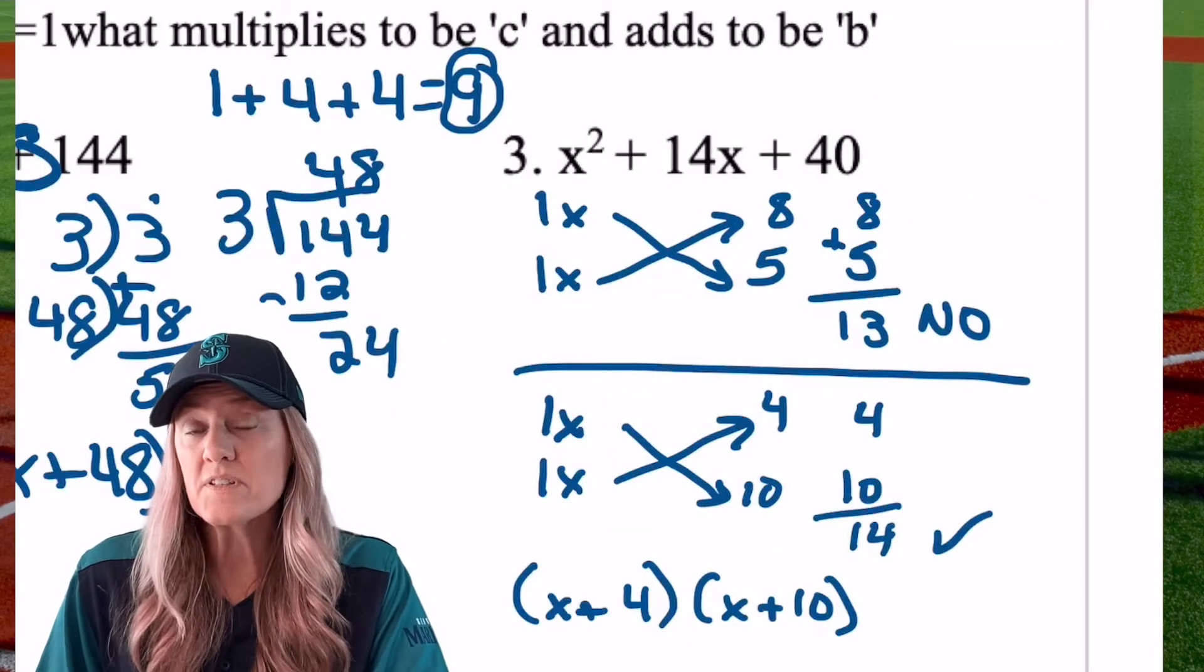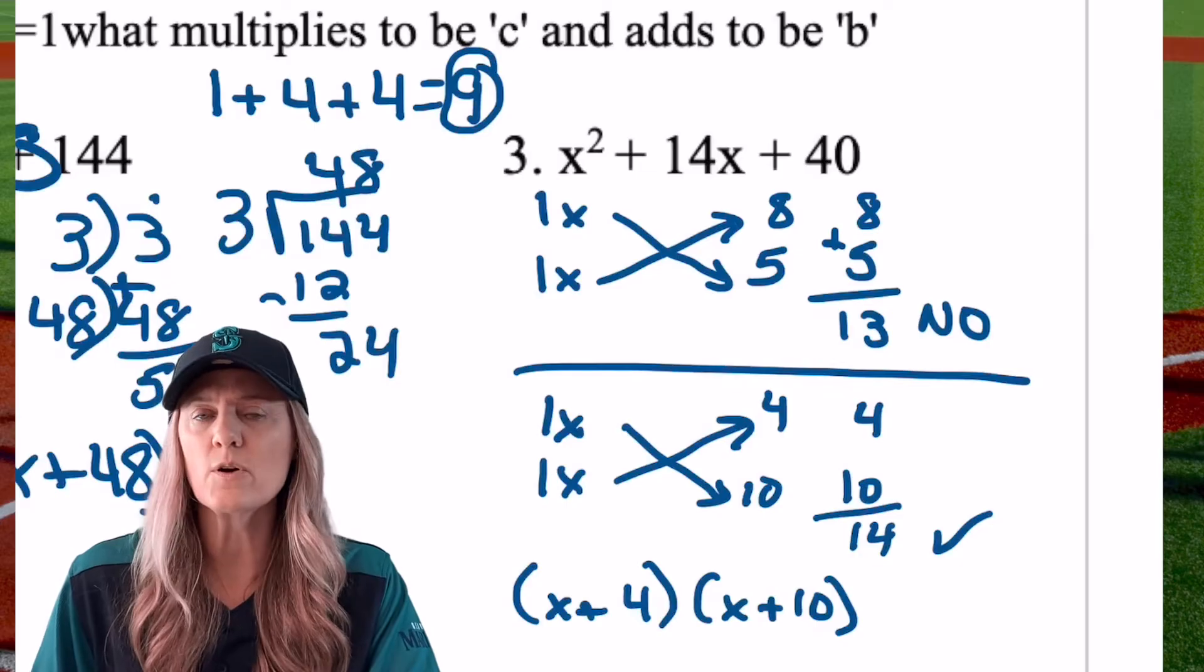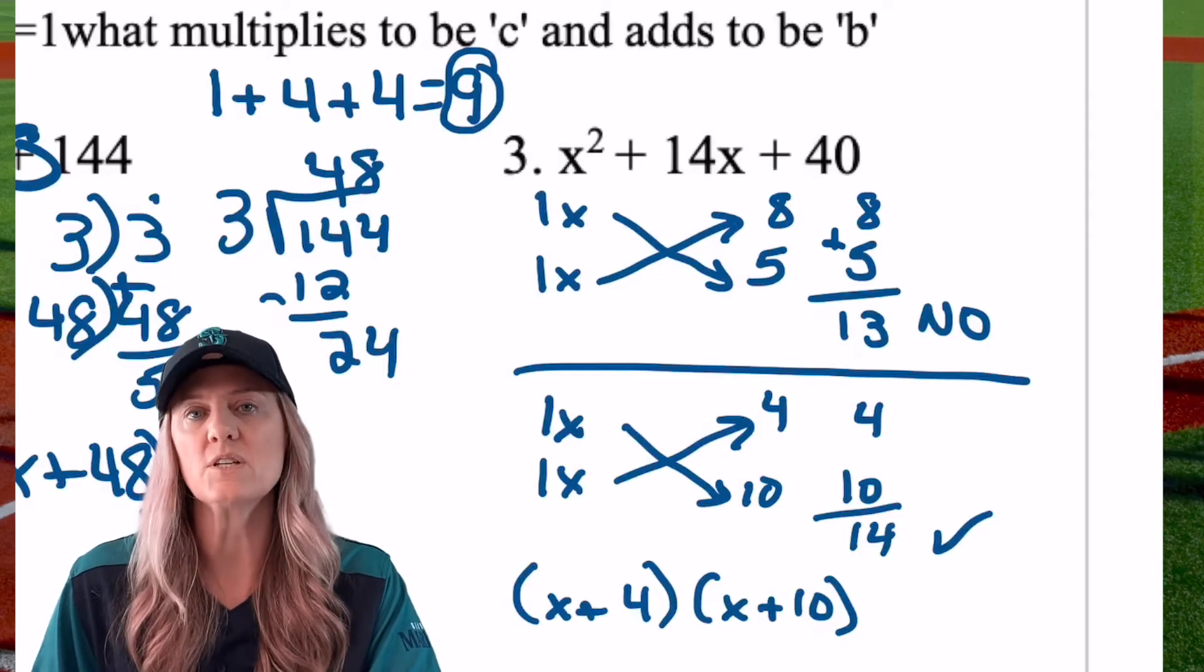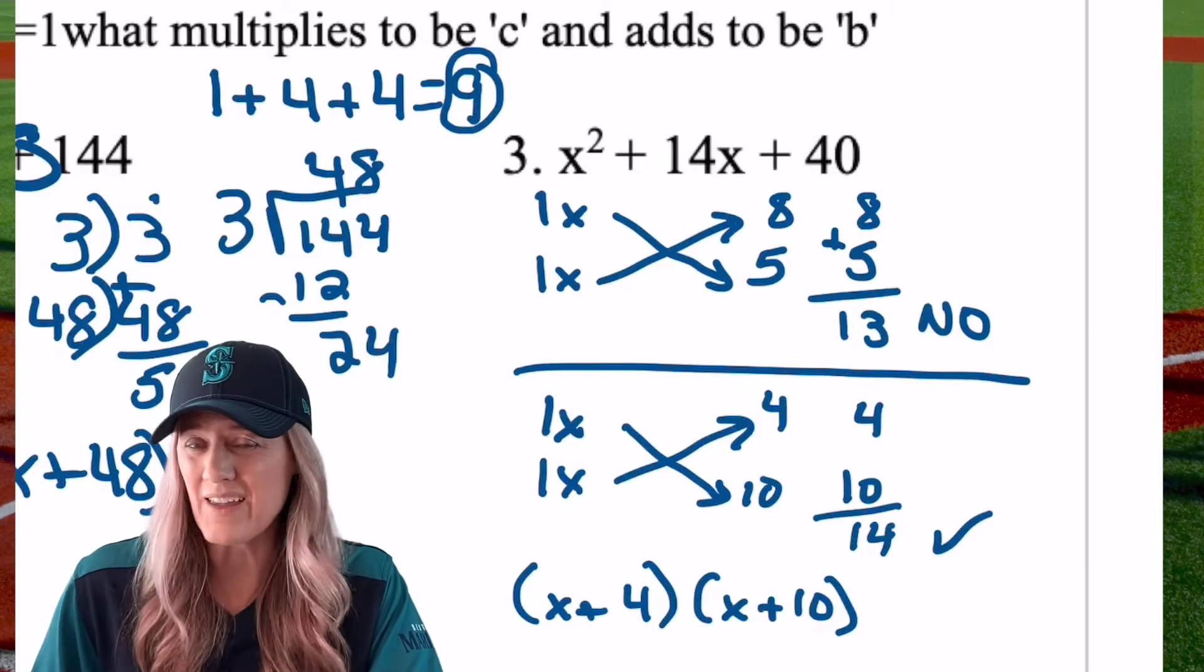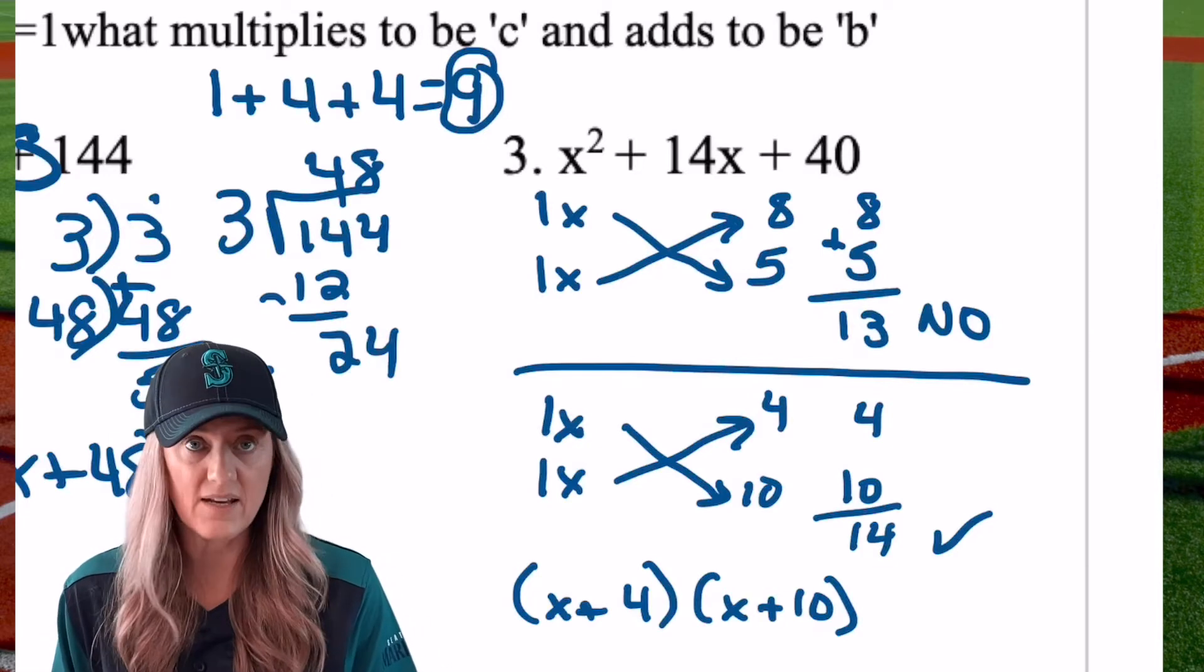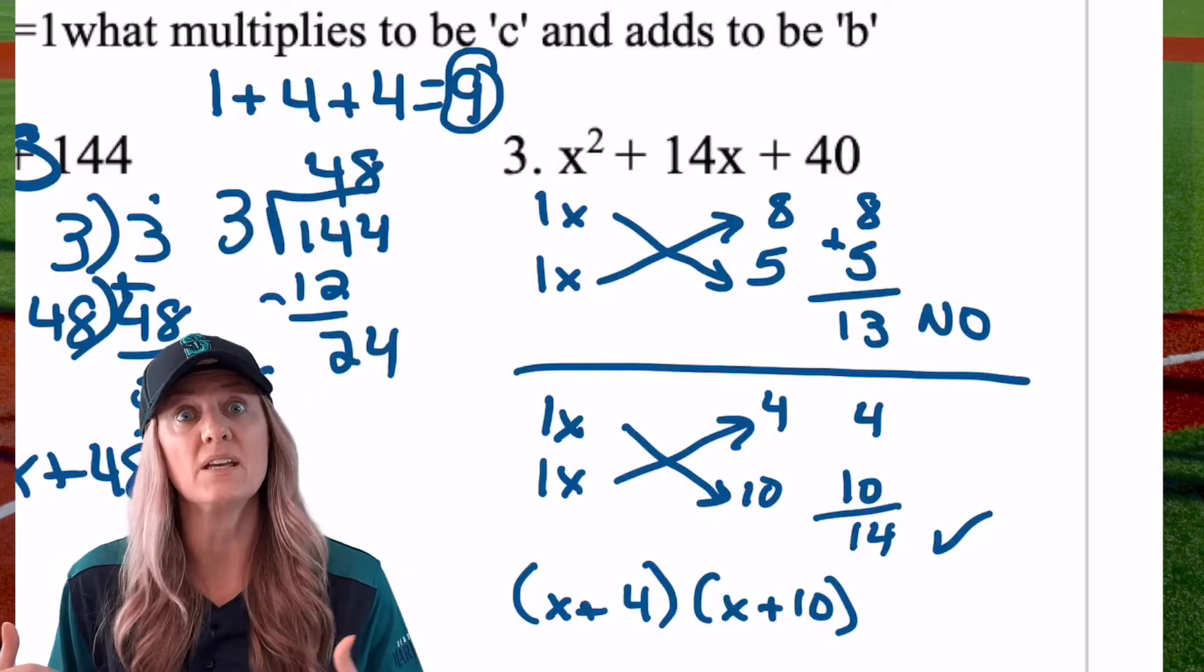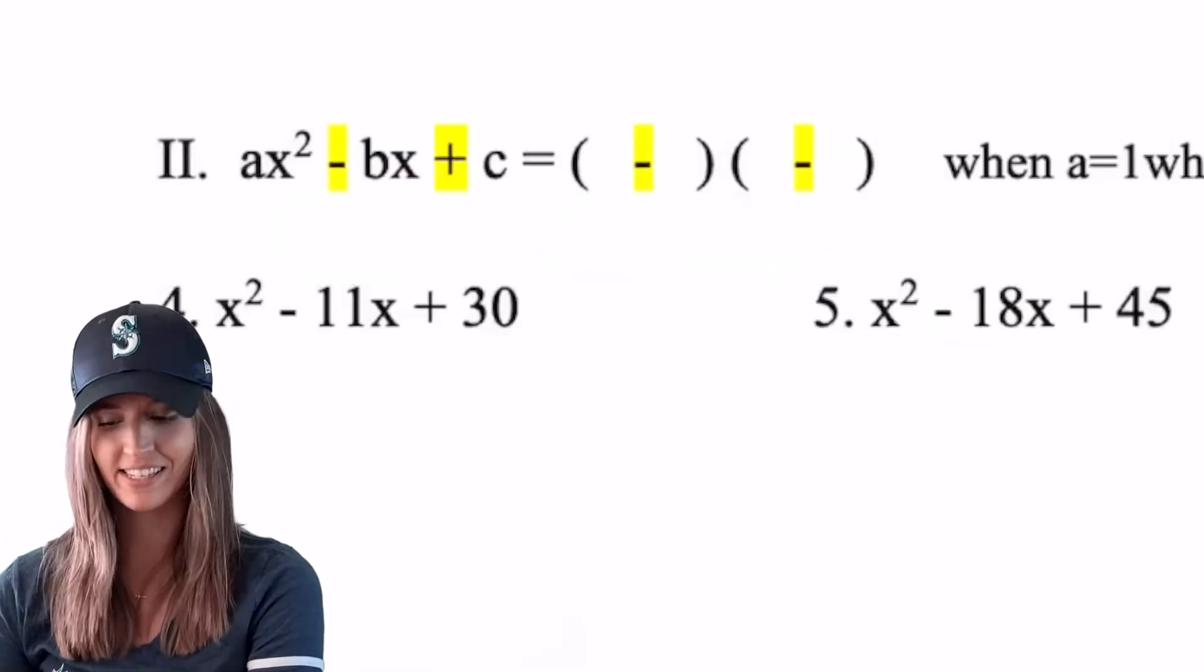So we want you practicing it on the small stuff so you're ready for the big stuff. On this one, I purposefully went ahead and got one that wasn't the correct answer because I want you really focusing in on the fact that we should be checking each time. So eight times five didn't work. It gave me 13. So I just drew a line, said no, and I started over again. And then of course, four times 10 does add to be 14. So that was our final answer.